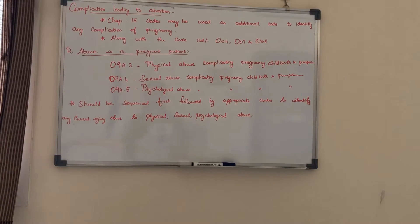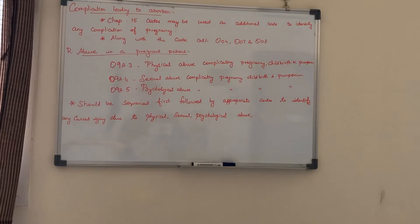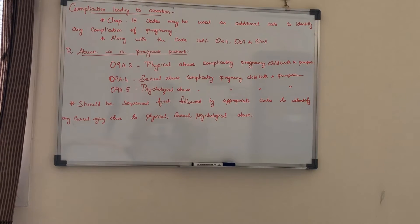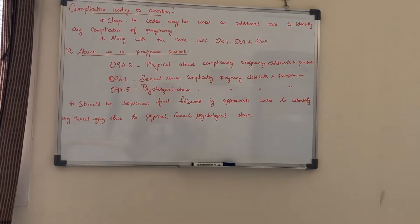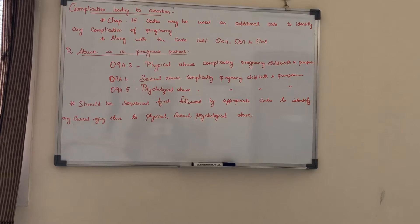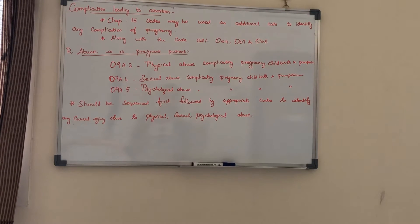The next topic is complication leading to abortion. If there is any complication which leads to abortion, then we have to assign a chapter 15 code as an additional code to identify the complication of pregnancy. It should be combined with code category O04, O07, and O08.